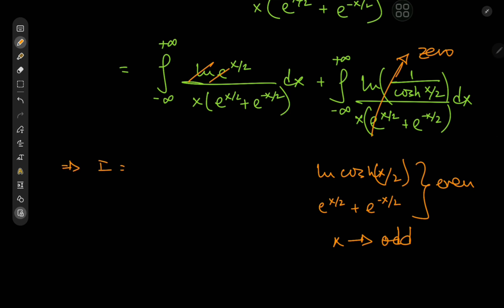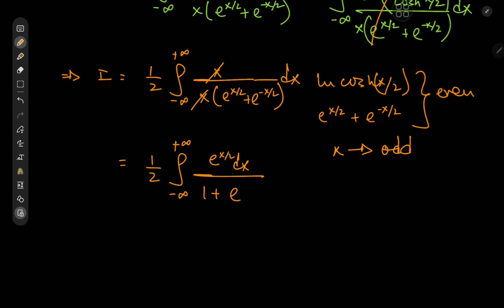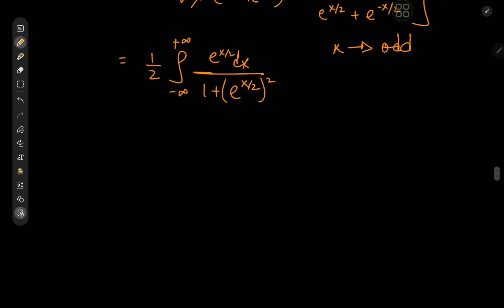This implies that the target integral I is just (1/2) times the integral from −∞ to +∞ of [x/2] / [x · (eˣ/² + e^(−x/2))] dx, with the x's canceling beautifully. Expanding by factoring out eˣ/², we get (1/2) ∫ eˣ / (1 + eˣ) dx from −∞ to +∞. Then we let z = eˣ/², which implies (1/2)eˣ/² dx = dz, and as x → −∞, z → 0.